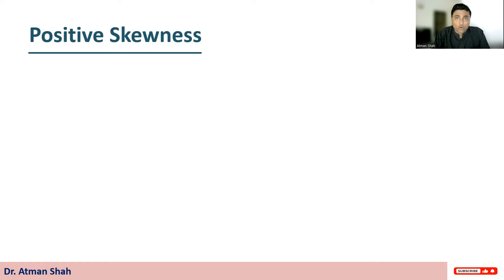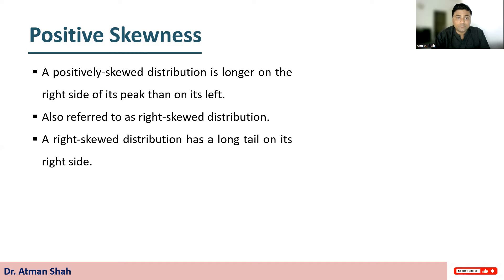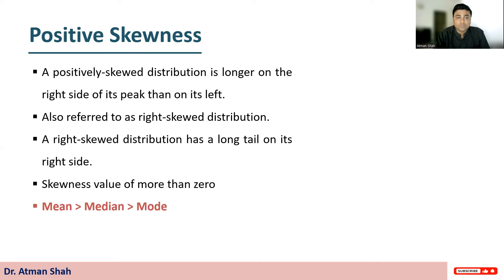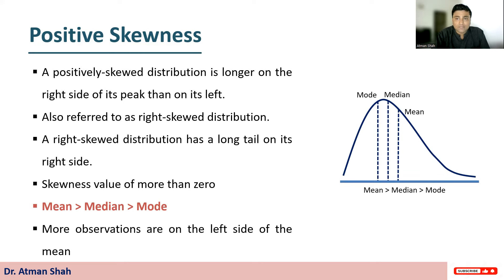Now let's understand positive skewness. A positively skewed distribution is longer on the right side of its peak than on its left. It is also referred to as a right skewed distribution, which has a long tail on its right side. Hence the skewness value is more than zero. In this case, mean is greater than median, and median is greater than mode. More observations are on the left side of the mean. In the diagram, mean is greater than median is greater than mode, and most observations are on the left side.